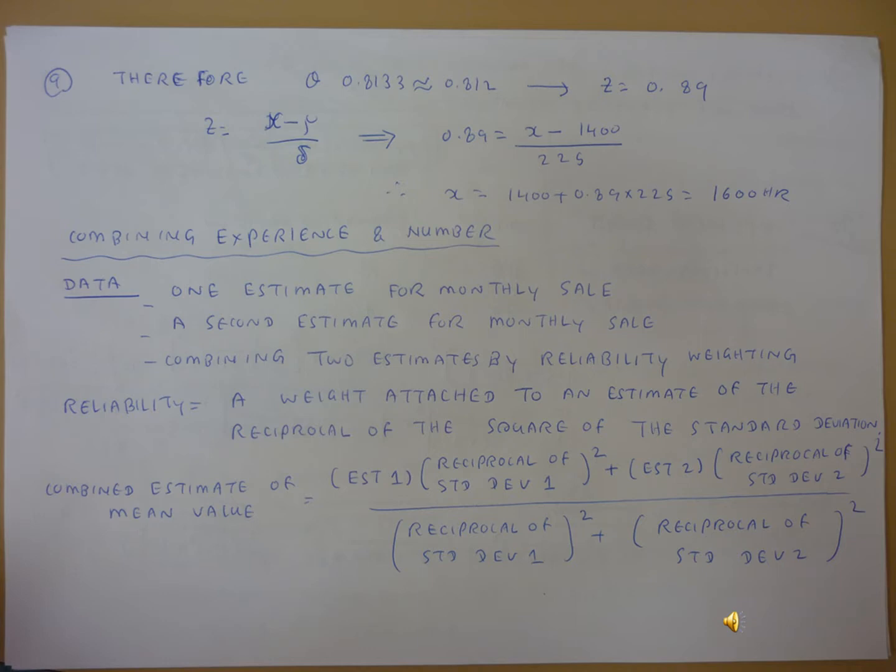The data will be the one estimate for the monthly sale or the second estimate for the monthly sale, or combining the two estimates by the reliability of the weight. So in this case, reliability is a weight attached to the estimate.